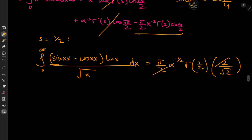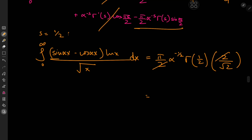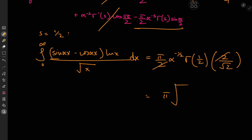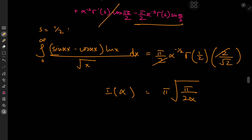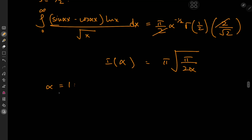Gamma(1/2) is famously equal to root pi. So combining everything, we have pi times root pi divided by 2, times 1 over root alpha — giving i(alpha) = pi*sqrt(pi) / (2*sqrt(alpha)). For the target case, we need alpha = 1, so the target integral i equals pi times root pi divided by 2. That's a pretty interesting result.